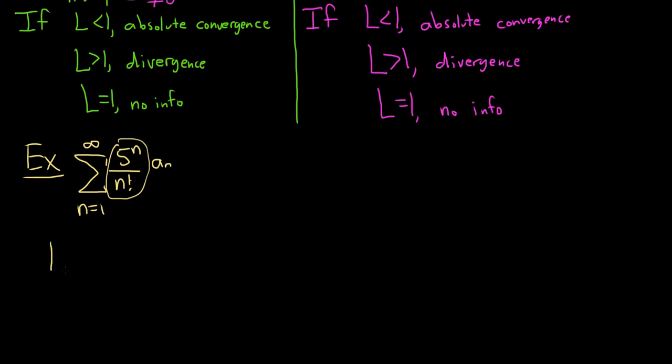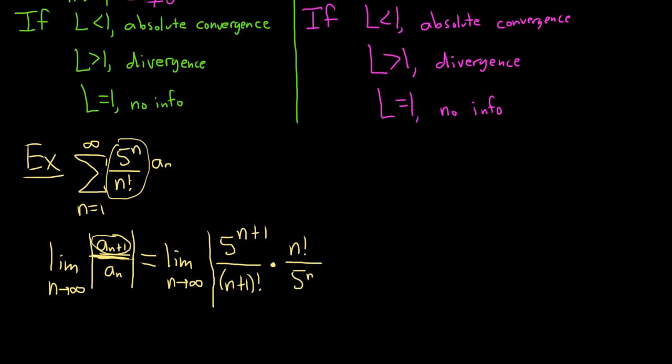So here a sub n is this piece here. So the ratio test says we have to start by taking the limit as n goes to infinity of the absolute value of a sub n plus 1 over a sub n. So this is equal to the limit as n goes to infinity. a sub n plus 1 basically means that we replace all of the n's with n plus 1's. So 5 to the n plus 1 over n plus 1 factorial. Now we're supposed to divide by a sub n. However, when you divide by a sub n it's much easier to multiply by the reciprocal. So this is times n factorial over 5 to the n.